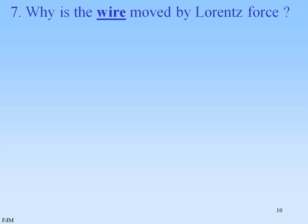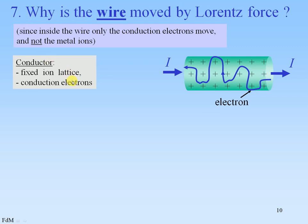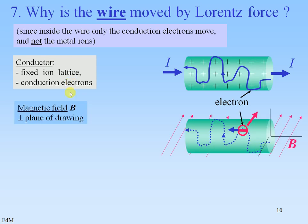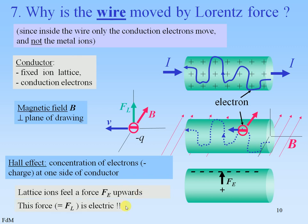But the question remains: why is the wire moved by a Lorentz force? Since inside the wire we have only the conduction electrons that can move, but the metal ions are fixed. We have a fixed ion lattice and conduction electrons. There is a magnetic field perpendicular to the plane of drawing, and it means that the electrons will feel a Lorentz force, causing a concentration of electrons at one side of the conductor — this is the Hall effect, of course. The lattice ions feel a force upwards, and therefore the ions will move upwards. This force on the metal ions is electric, and that is the reason the wire can move.